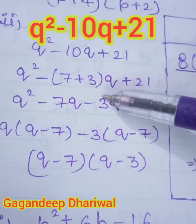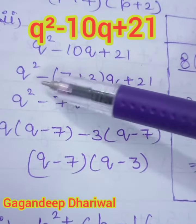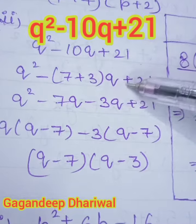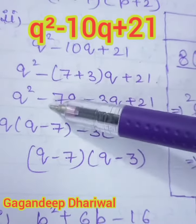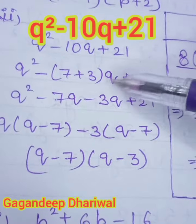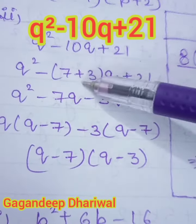So in place of 10 you can write 7 plus 3. So q square minus, in place of 10 you can write 7 plus 3, q plus 21. Now open the bracket, you will have q square minus 7 into q, 7q, then this minus 3q plus 21.